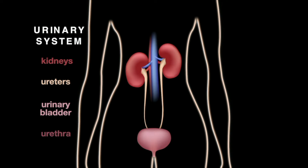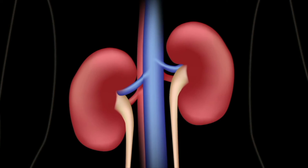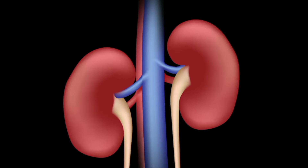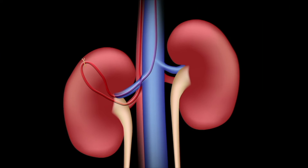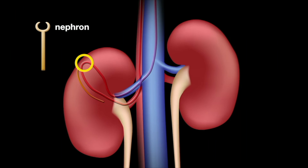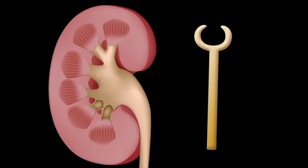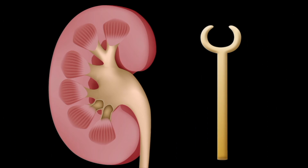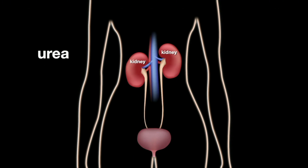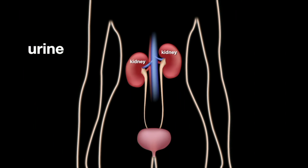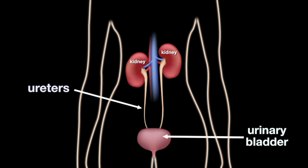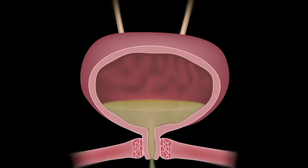The urinary system removes waste products from your blood, with your kidneys playing a very important role — they constantly clean and filter your blood up to 300 times a day. A large artery brings blood into each kidney. Nephrons are microscopic filters that remove harmful substances. One of the most important substances removed is a poisonous chemical called urea, which comes from the breakdown of proteins. After filtering and reabsorption, the remaining waste is called urine. Urine leaves each kidney through a tube called the ureter, flows into the urinary bladder, and exits the body through the urethra.